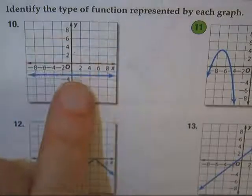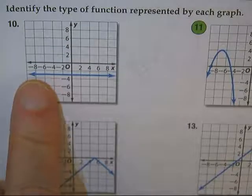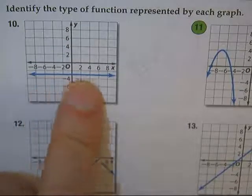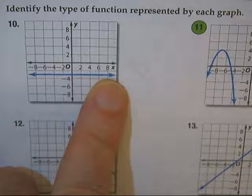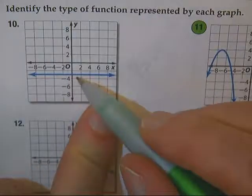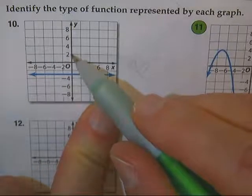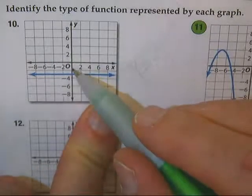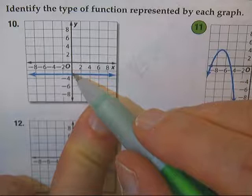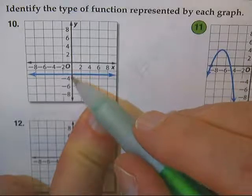Okay, we're on 10, and notice this is a flat line. It looks like it's about 3, because every line is 2, and a half would be about 3.